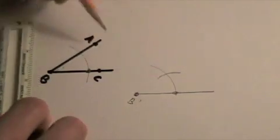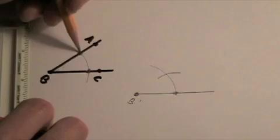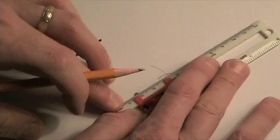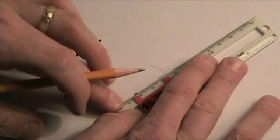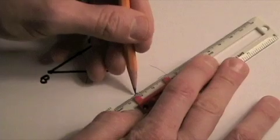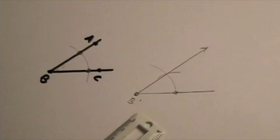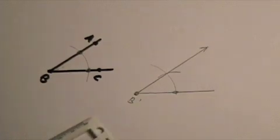Where the two arcs intersect is this point right here. So now I'm just going to move and draw a line segment that goes from point B prime through that point where those two arcs intersect. And now I've got two congruent angles.